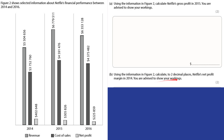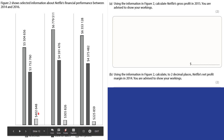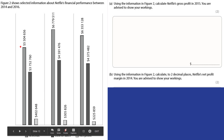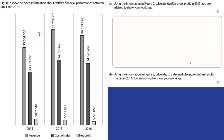Now calculate the net profit margin for 2014. Net profit is 402,648 — put that over the revenue figure of 5,504,656 and multiply by 100. That tells you what percentage is retained for every dollar of income this firm receives. The higher the percentage, the more of their overall revenue they retain as net profit.